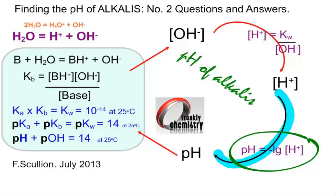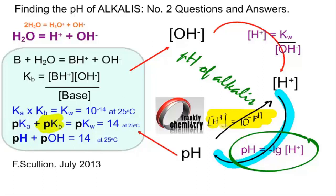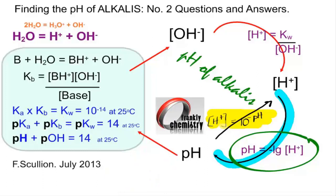Some questions require you to go back from pH to the hydrogen ion concentration. The inverse log gives [H⁺] = 10^(−pH). To get Ka from pKa, Ka = 10^(−pKa). Similarly, Kb = 10^(−pKb), and Kw = 10^(−pKw). These are the various formulae and steps required in the following examination questions.